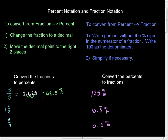Because this decimal stops, we don't have to worry about a repeating decimal in the percentage. On this next example, it would be best if you convert this into an improper fraction first, as it is a mixed number.